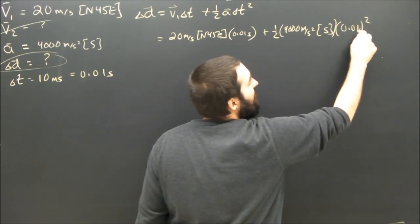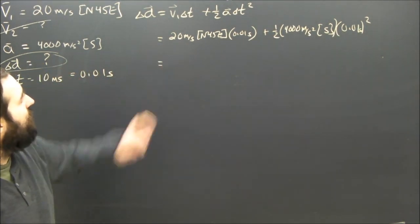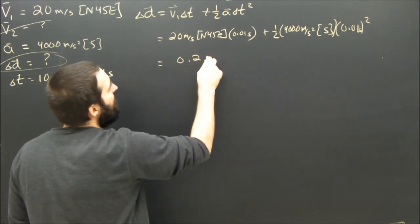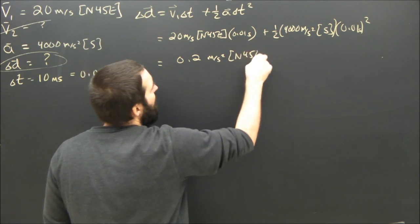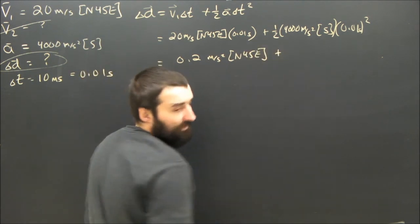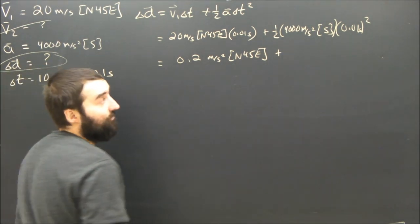Now let's simplify all this. Let's get rid of some of the units. We'll end up with 0.2 meters per second squared north 45 east, plus what's going to happen if I simplify all those things. I'll also end up with 0.2.